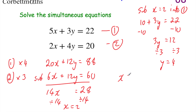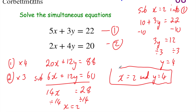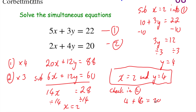So we've got x equals 2 and y equals 4 — that's our solution. Let's check in equation 2: 2x is 2 times 2, which is 4, plus 4y is 4 times 4, which is 16. And that should equal 20. 4 plus 16 is 20, so we get 20 equals 20. We've solved those simultaneous equations.